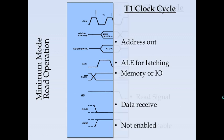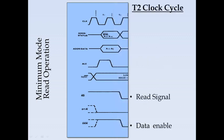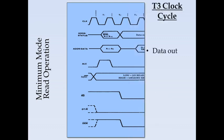During the T2 clock cycle, the READ signal is asserted (active low) and the data enable signal is given to prepare the transceiver to receive data. During the T3 clock cycle, the data is provided by the memory or I/O device.